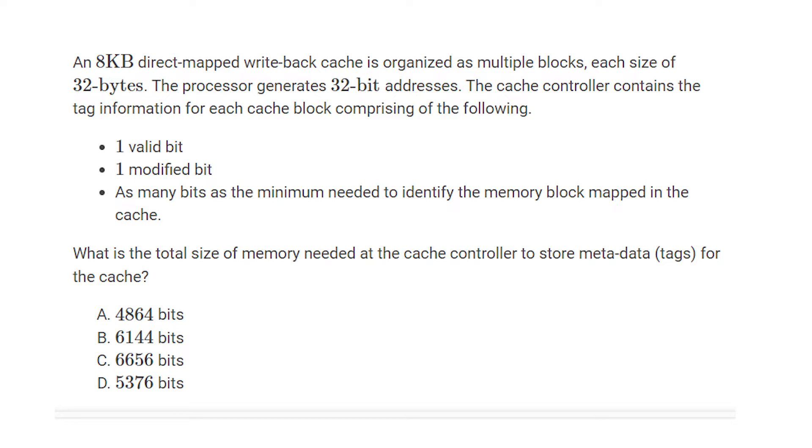The cache controller contains tag information for each cache block comprising of the following: one valid bit, one modified bit, and as many bits as the minimum needed to identify the memory block mapped in the cache. What is the total size of memory needed at the cache controller to store metadata, that is tags, for the cache?